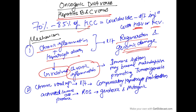Now, if there is an unresolved chronic inflammation — which is usually present because it's a chronic disease — the immune system may become maladaptive and it may promote tumor genesis itself. So, the chronic inflammation, hepatocyte damage, regeneration, and genomic damage, combined with a maladaptive immune system, all promote tumor growth.